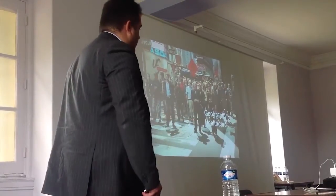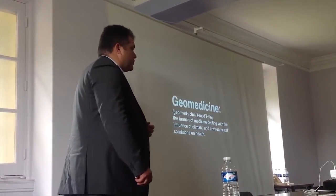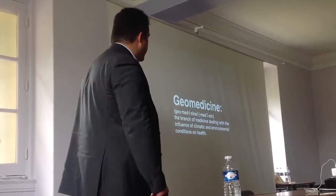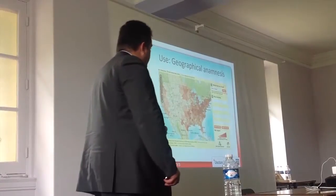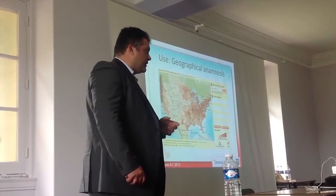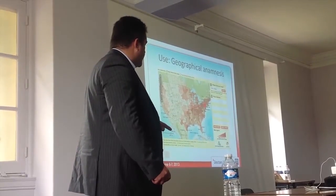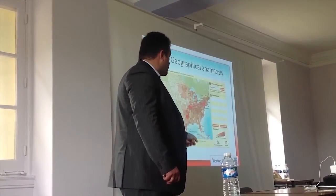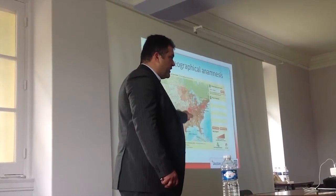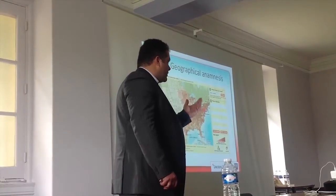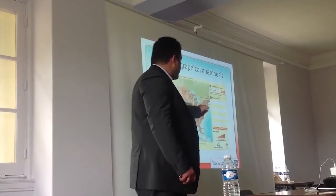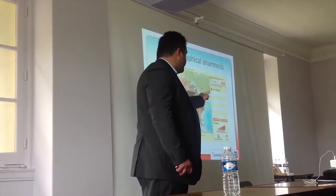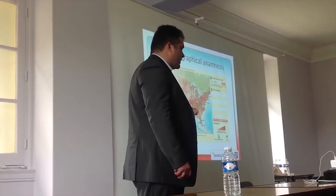But how does all of this relate to healthcare? There are two applications of geographical information systems in healthcare. The first is geomedicine and the second is geomarketing. Geomedicine deals with the integration of geographical data with health conditions. For example, if you trace the places in which a person has lived and associate them with a map of heart attack risk subdivided by area, as a physician you can identify a risk factor for this person even if you don't know them.